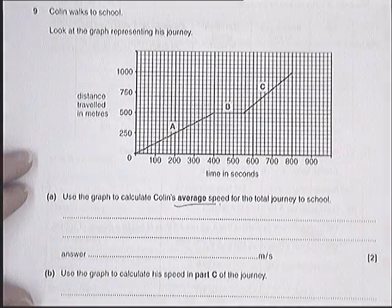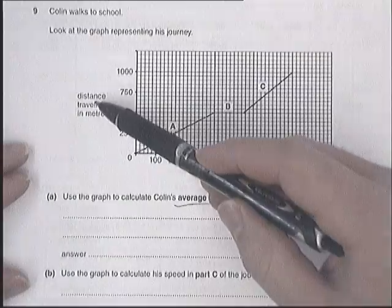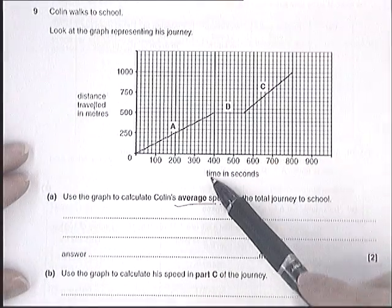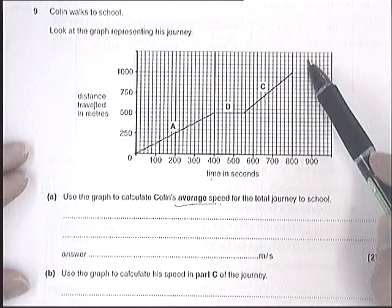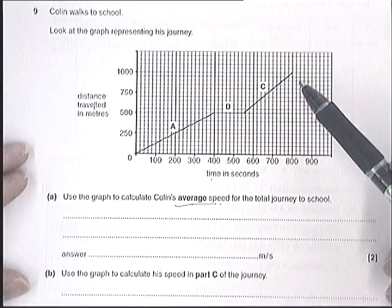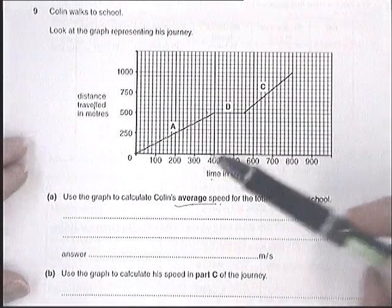Whenever you're working with a graph to represent motion, just check what kind of graph it is. This is a distance-time graph, so the slope is the speed. The steeper it is, the faster it's going. If it's horizontal, it's stopped.